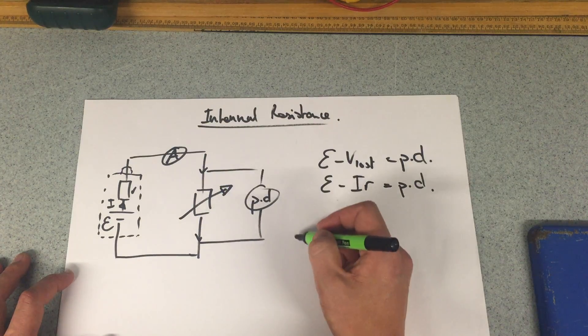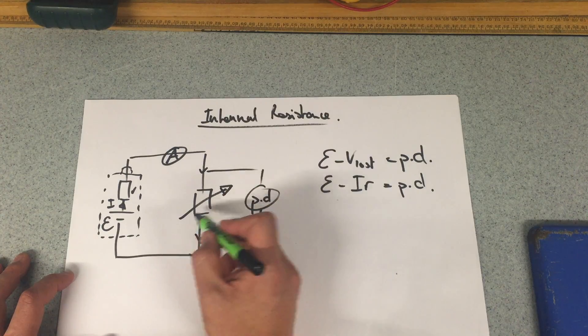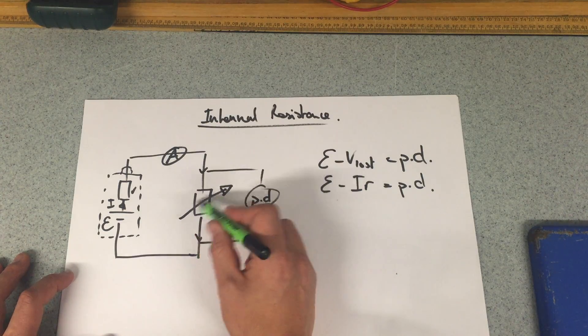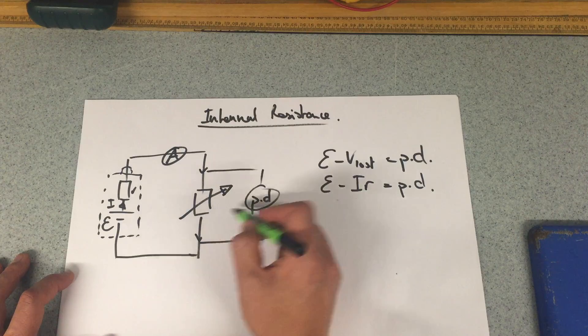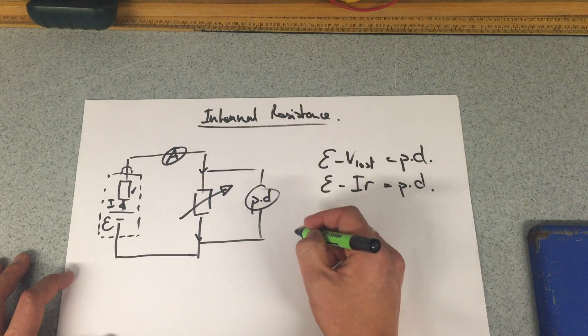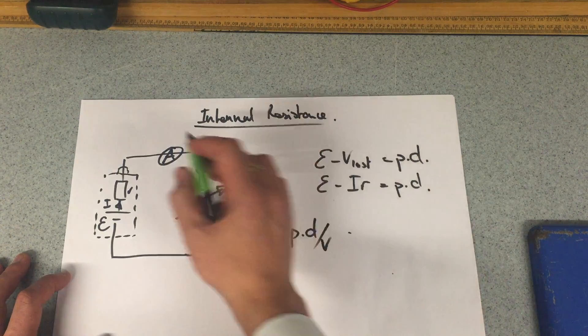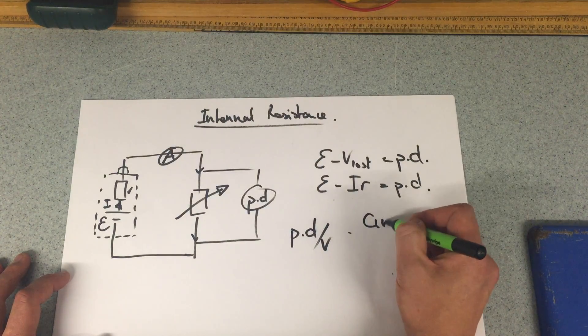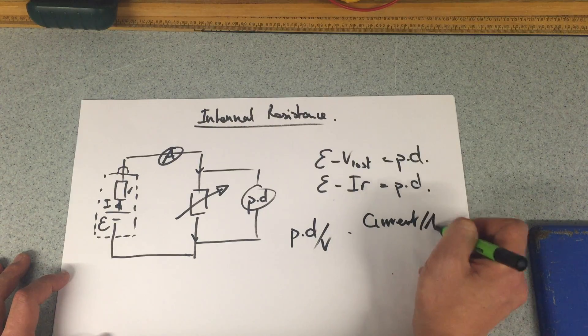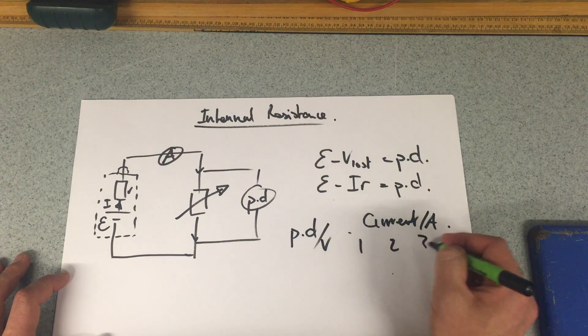So what are we changing? Our independent variable is we're changing the resistance, but the product that is changing is finding different potential differences in volts. And then we're going to be measuring the current in amps.